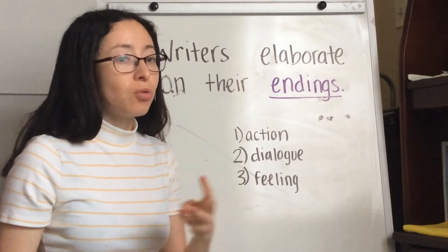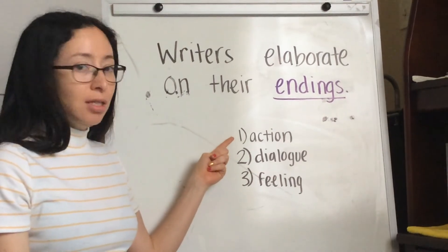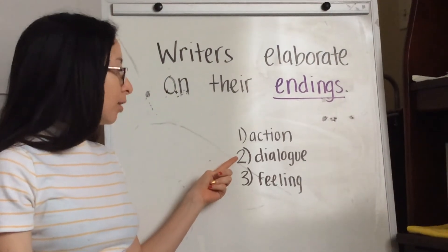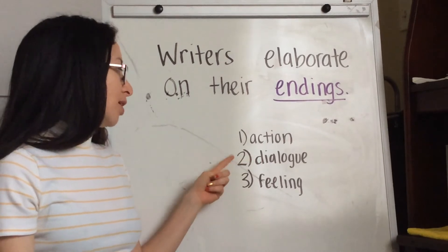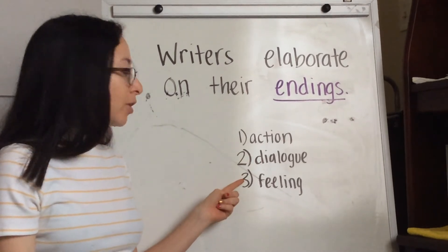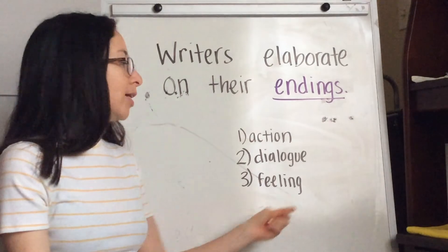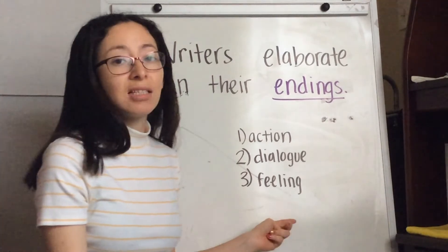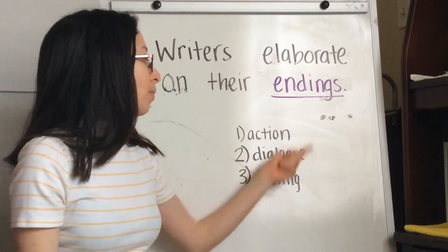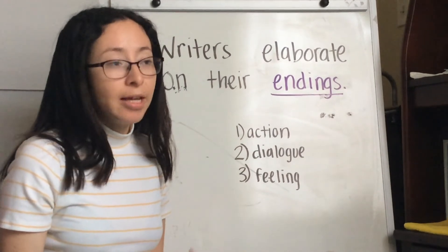There are three ways to do this. You can use action, when your characters move; dialogue, when they talk; and feeling, how your characters are feeling. You're really good at using these in the beginning of your story, but we're making sure that we also have strong endings.